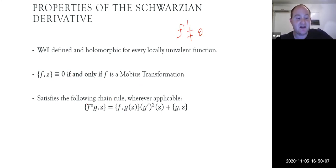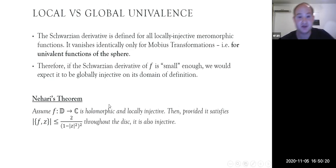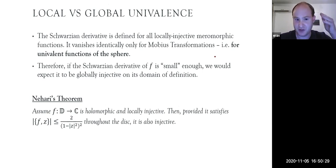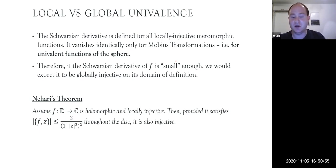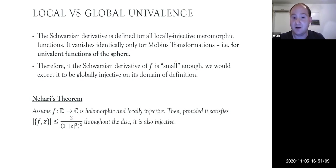The third property is that it satisfies the following chain rule whenever the composition of f with g is well-defined. Moving on to some modern mathematics: the Schwarzian derivative is defined for locally univalent functions, and heuristically, provided a given Schwarzian derivative is somehow small enough, we would expect it to be globally injective on the domain of definition, because a small enough Schwarzian derivative would imply that the mapping is somehow close to being a Möbius transformation.